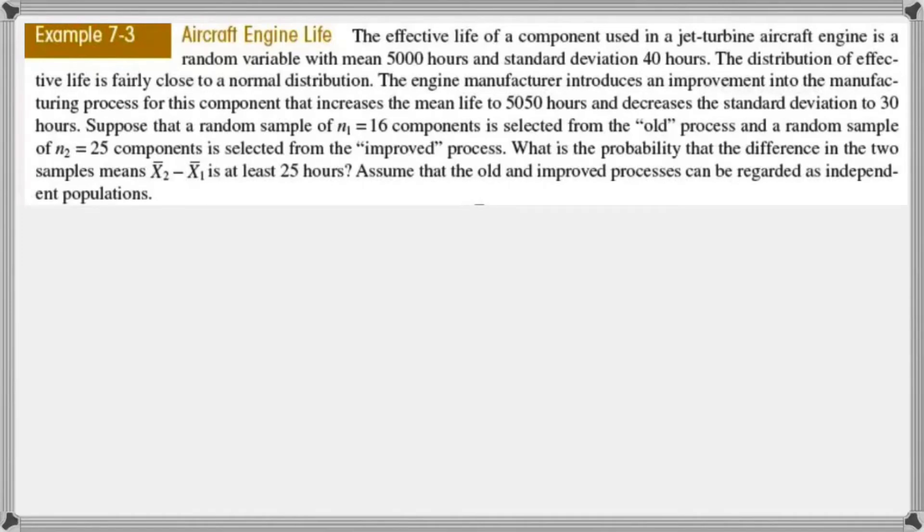It says the effective life of a component used in jet-turbine aircraft engine is a random variable with average of 5,000 hours and standard deviation of 40 hours. The distribution of effective life is fairly close to a normal distribution. The engine manufacturer introduces an improvement into the manufacturing process for this component that increases the average of life to 5,050 hours and decreases the standard deviation to 30 hours. Suppose that a random sample of 16 components is selected from the old process, and a random sample of 25 components is selected from the improved process. It's asking you, what is the probability that the difference in the two sample means is at least 25 hours. Assume that the old and improved processes can be regarded as independent populations.